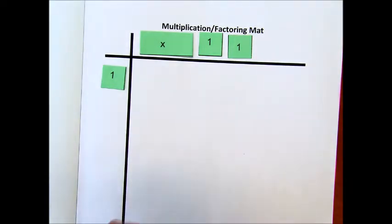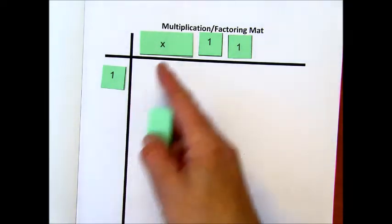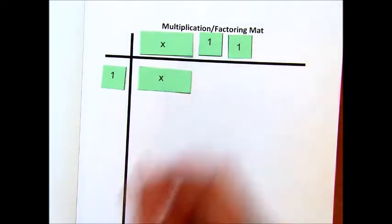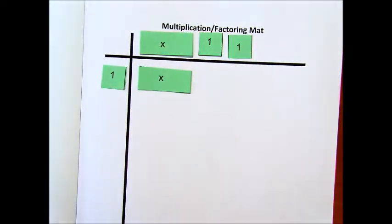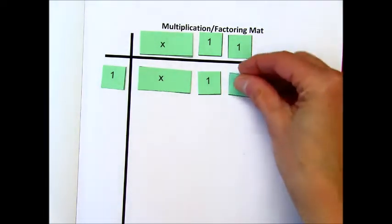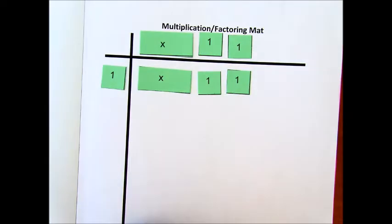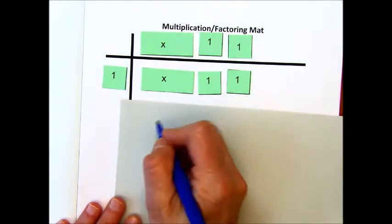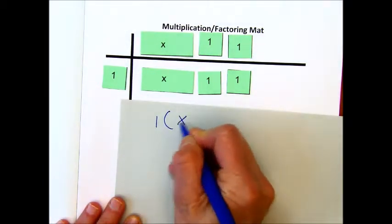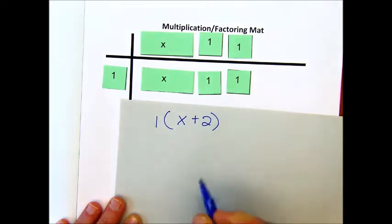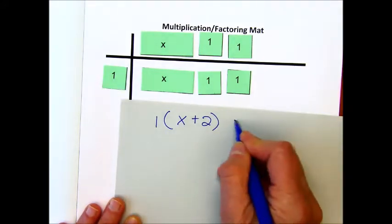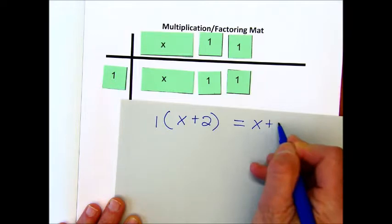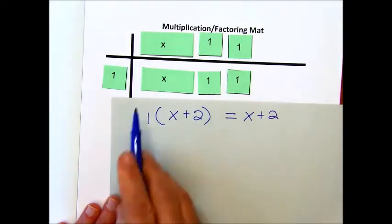So, the way I would show it as a model, 1 times x is x, and 1 times 2 would be 2. And so our answer in this problem would be shown in this middle section of the mat. And so I'm just going to go ahead and write out that problem. We had 1 times x plus 2, and if we distribute that 1, that's going to give us x plus 2. And that's what we've got here.